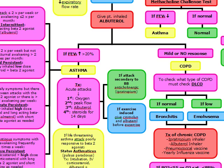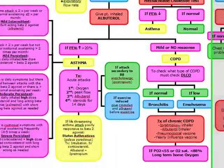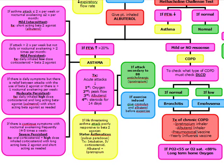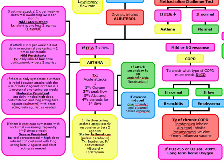Treatment of chronic COPD includes ipratropium inhaler, albuterol inhaler, pneumococcal vaccine, and yearly influenza vaccine. Long-term oxygen therapy is indicated when PO2 is less than 55 or O2 sat is less than 88%. The two factors that decrease mortality in COPD patients are stopping smoking and home oxygen therapy, especially at nighttime.